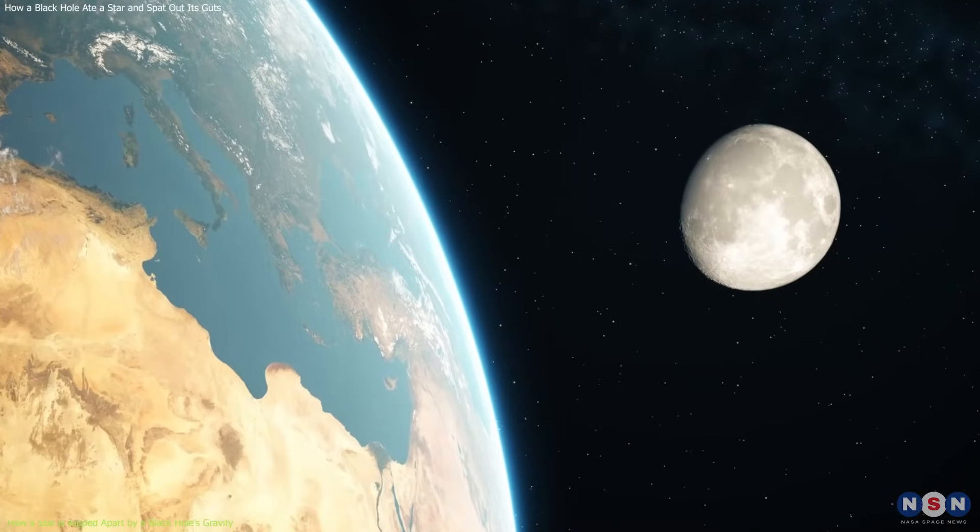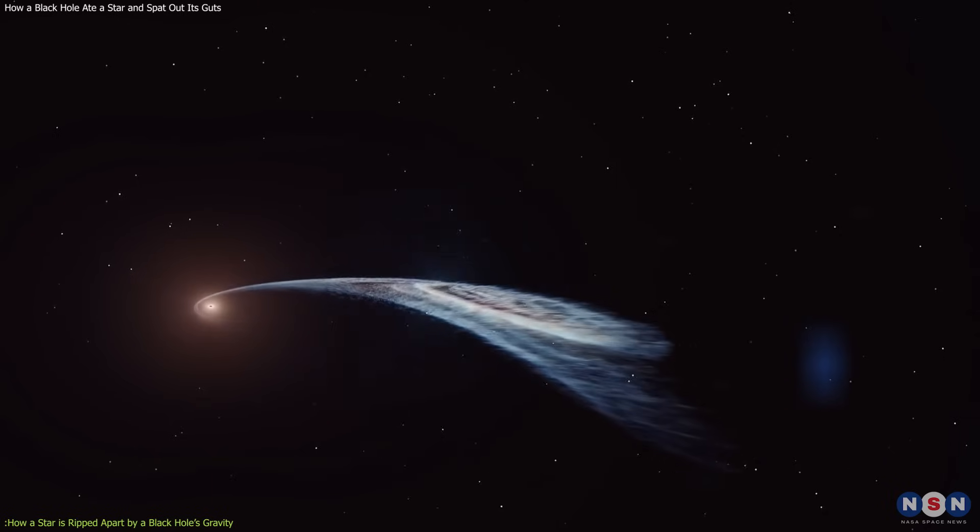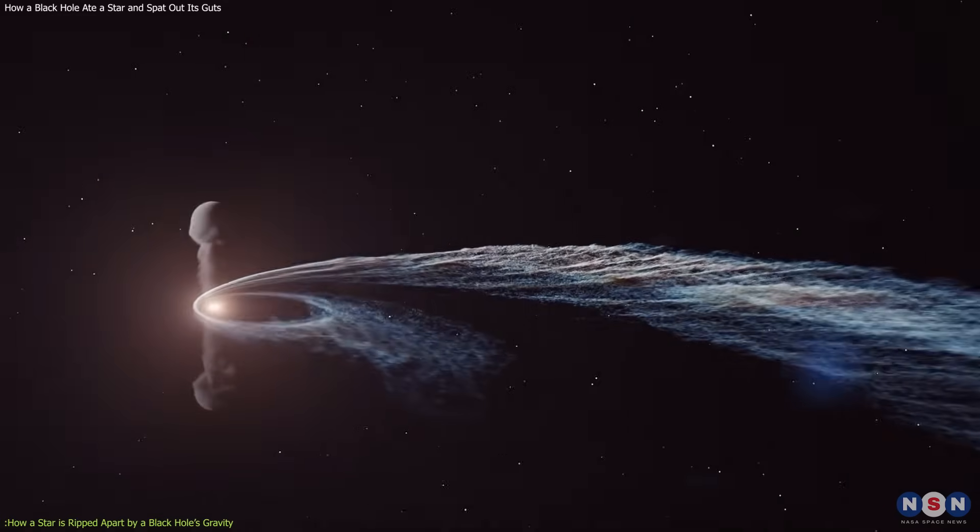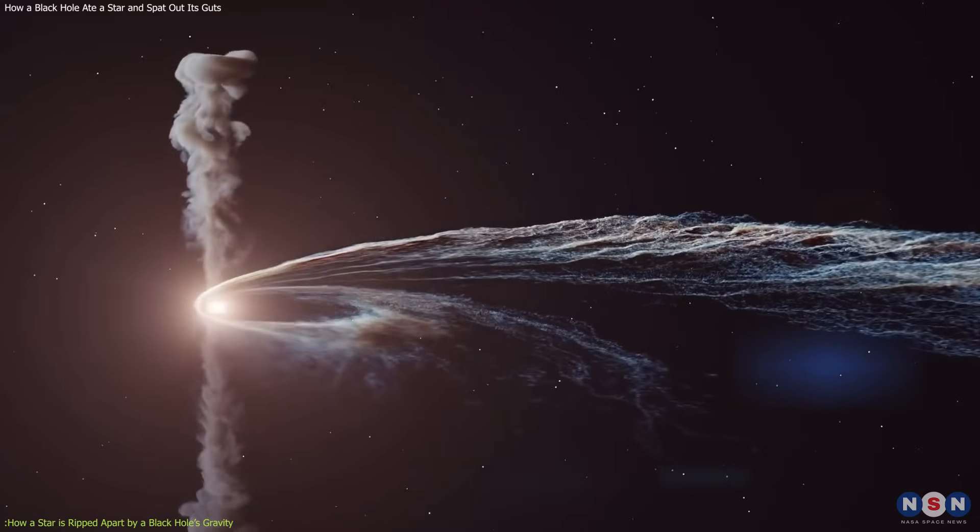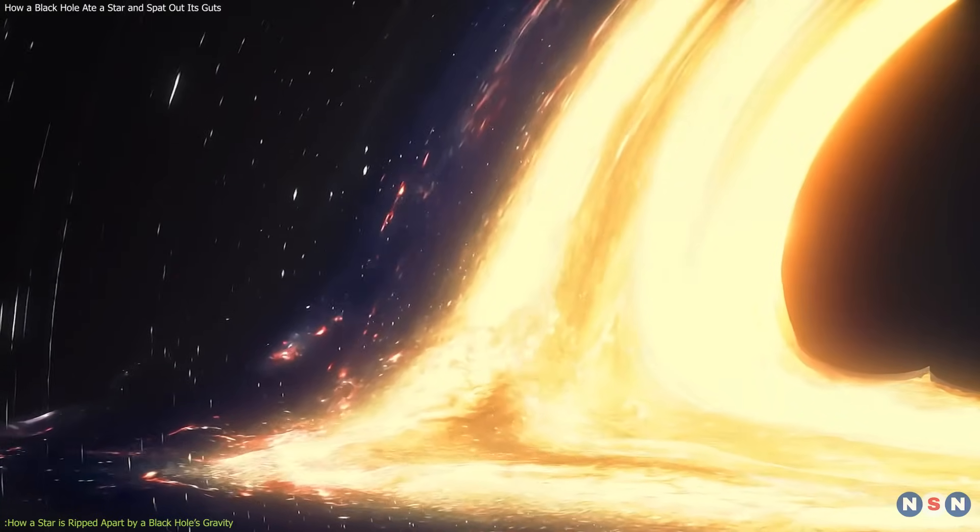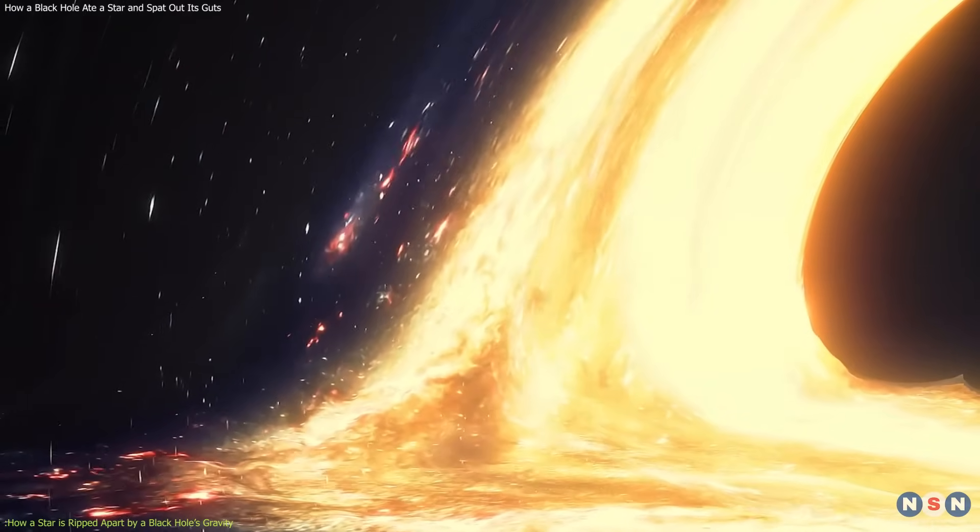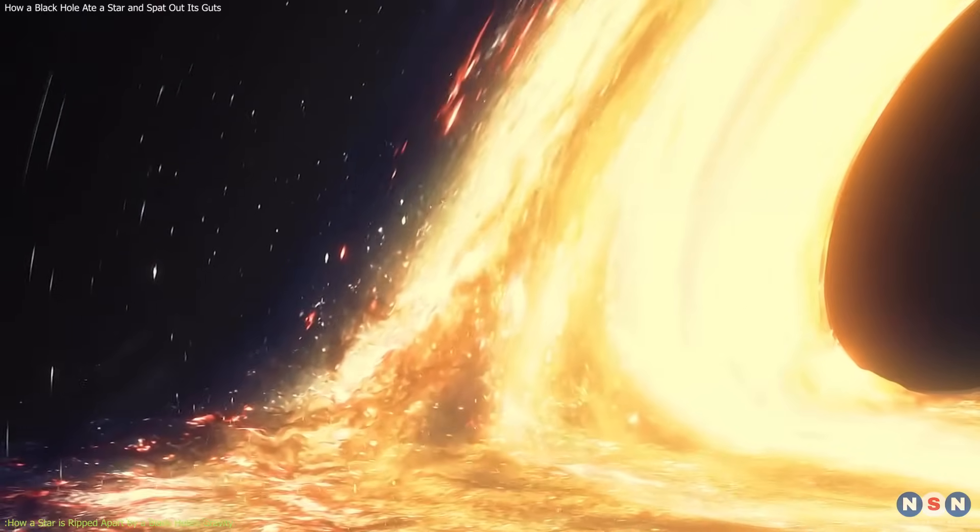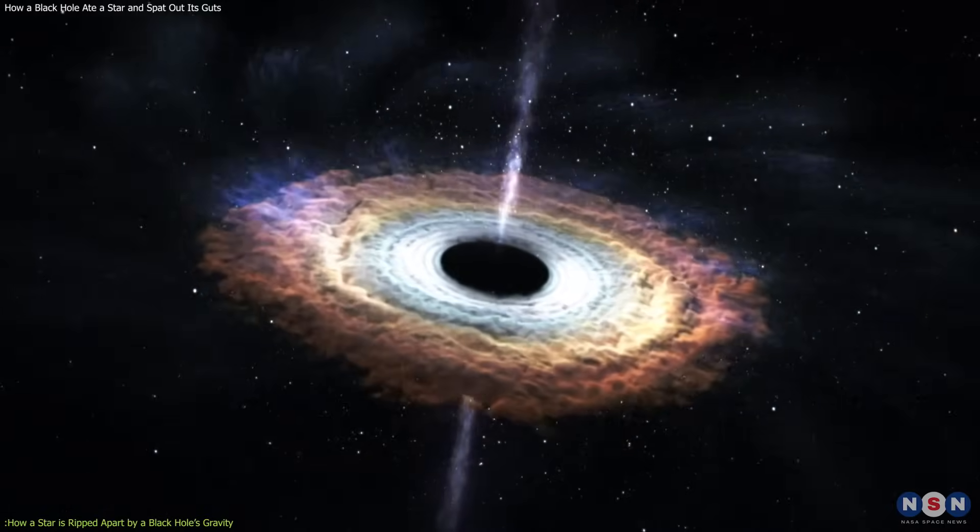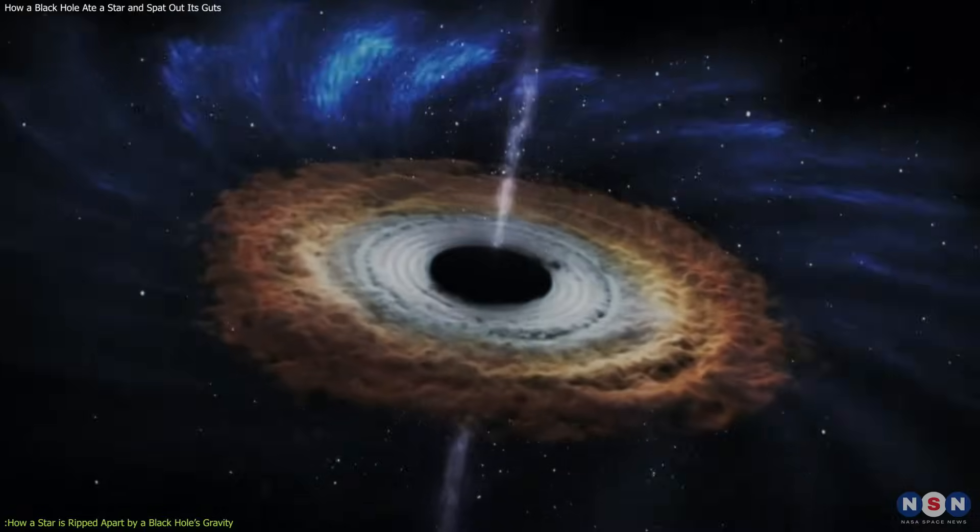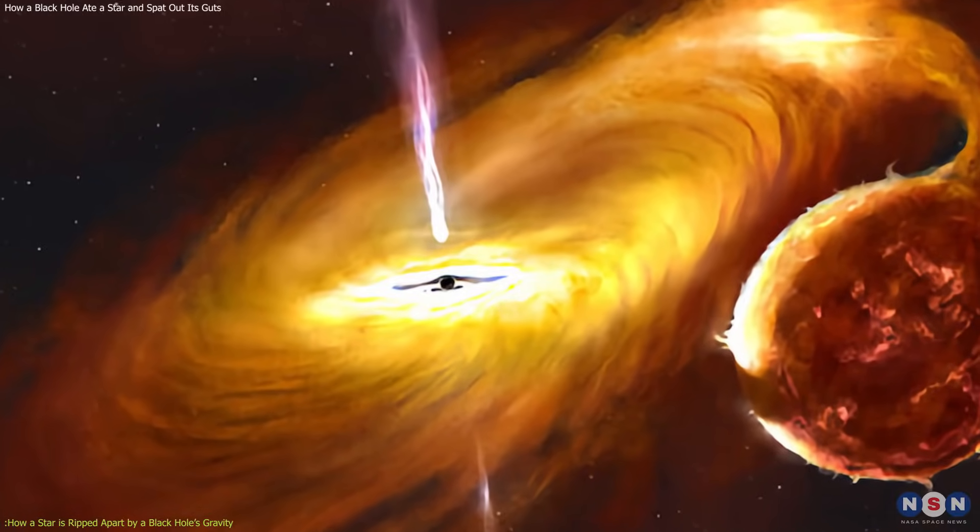This is similar to how the Moon's gravity causes tides on Earth, but much more extreme. The star's material is then pulled towards the black hole and forms a disk of hot gas around it. This disk is called an accretion disk, and it emits a lot of radiation as the gas heats up and spirals inward. Some of the star's material is also ejected into space at high speeds, forming jets or streams of gas that glow brightly.